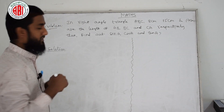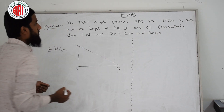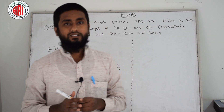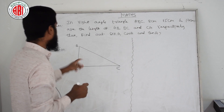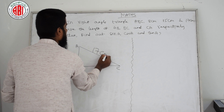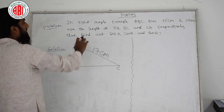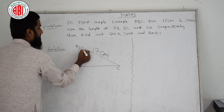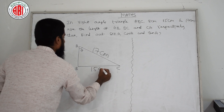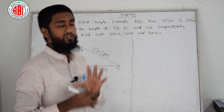Look at the board — I am drawing one triangle. I am marking the vertices. We need to decide which side to mark first. You have to see the longest side. The longest side here is AC, so we mark that as 17 cm. We are taking theta at A, as per the question. Opposite to theta we have 15 cm, and the remaining side AB is 8 cm.